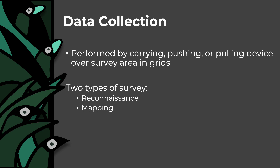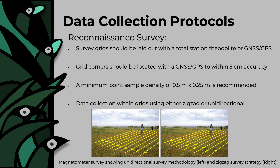Given the general rapidity of magnetometer survey compared to other remote sensing techniques, communities may wish to forgo reconnaissance survey and consider investigating the entire area with a higher resolution mapping survey once they have established that the approach is applicable. For a reconnaissance survey, grids should be laid out with a total station, the autolite, or a GNSS or GPS system. Grid corners should be located with a GNSS or GPS to within 5 cm accuracy. A minimum point sample density of 0.5 m by 0.25 m is recommended, and data collection within grids should be done using either zigzag or unidirectional traverses.